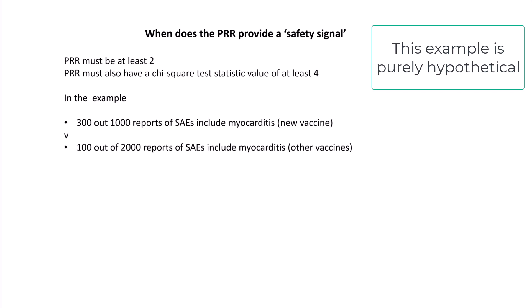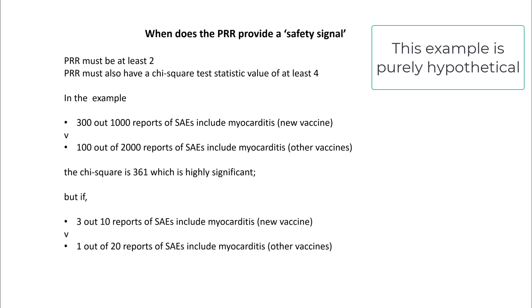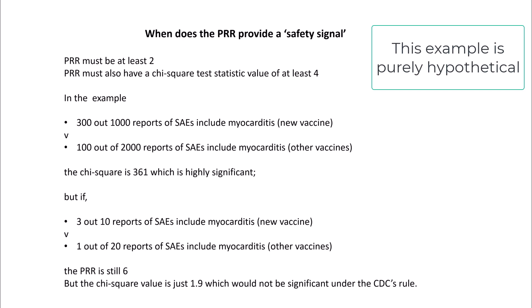In the example we just looked at, with 300 out of 1,000 reports for the new vaccine and 100 out of 2,000 for the other vaccines, the chi-square is 361, which is highly significant. But if the overall numbers were far fewer — say 3 out of 10 for the new vaccine compared to 1 out of 20 for the other vaccines — the PRR is still 6 but the chi-square value is just 1.9, which is not significant under the CDC's rule.